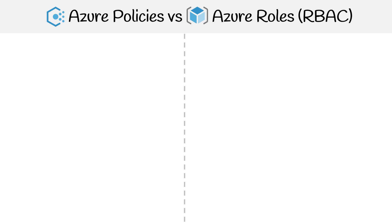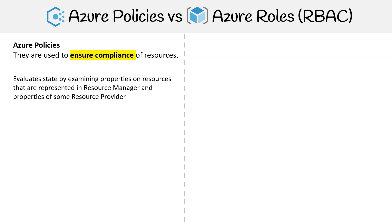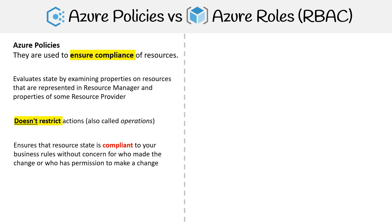It can be a bit confusing to distinguish between Azure Policies and Azure Roles, so we'll do a little comparison to help you understand the key differences. For Azure Policies, they are used to ensure compliance of resources. They evaluate the state by examining properties on resources that are represented in Resource Manager and properties of some resource providers. They don't restrict actions, which are also called operations. They ensure that resource state is compliant to your business rules without concern for who made the change or who has permission to make a change.